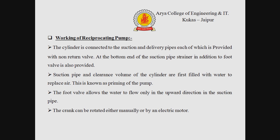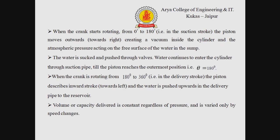Now we discuss about the working of the reciprocating pump. The cylinder is connected to the suction and delivery pipe, each of which is provided with a non-return valve. At the bottom end of the suction pipe, a strainer and foot valve are also provided. The suction pipe and clearance volume of the cylinder are first filled with water to replace air — this is known as priming of the pump. The foot valve allows water to flow only in the upward direction. The crank can be rotated either manually or by an electric motor.